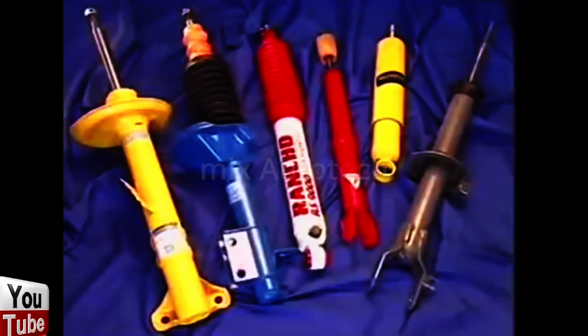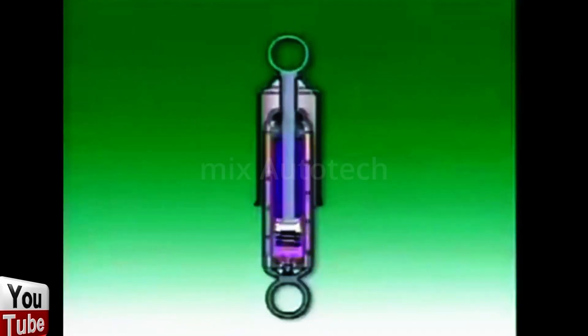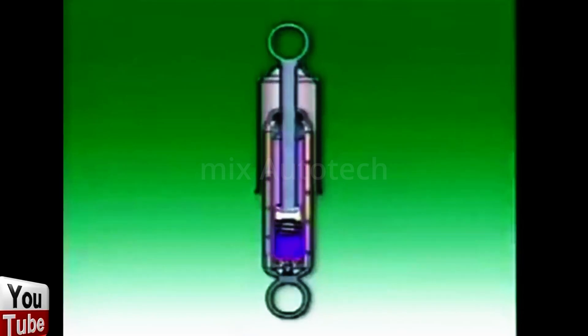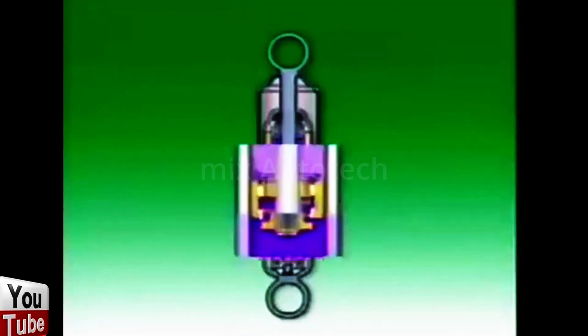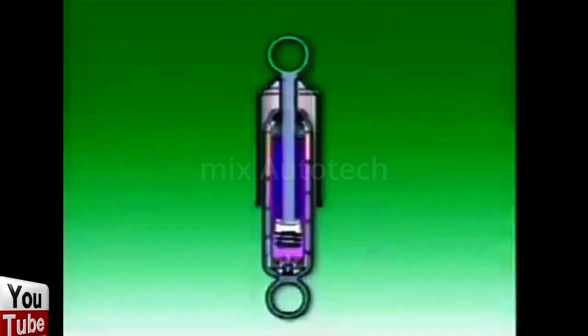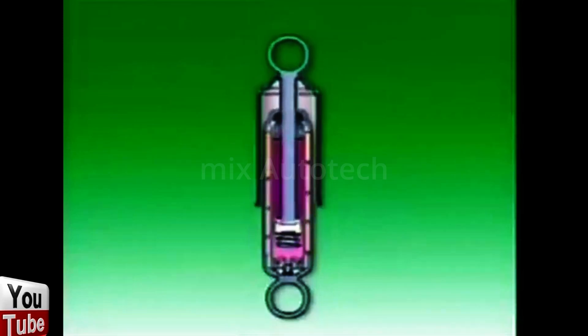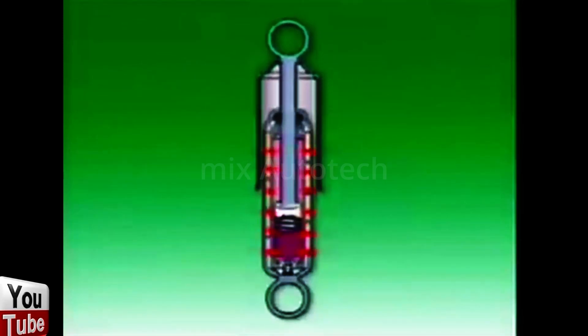Shock absorbers have a marked effect on how well tyres follow a road surface. They damp the natural bounce over the road and reduce spring oscillations. They all use a piston sliding in a cylinder filled with oil. The dampening action occurs as a result of the piston movement, forcing the oil through valves in the piston and at the foot of the shock absorber, which restrict oil flow. The oil heats up from this continuous movement as the energy of motion of the suspension is transformed into heat, which is transferred through the body of the shock absorber to the outside air.